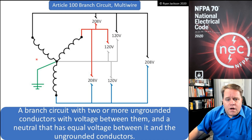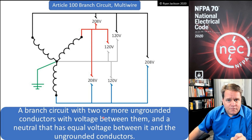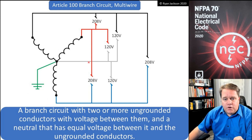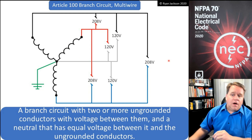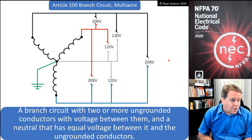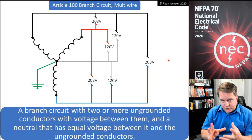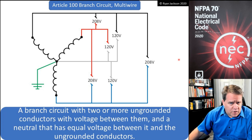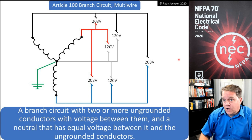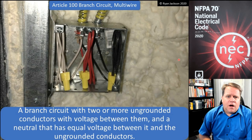If I'm sharing black, red, and blue with a white wire — two or more ungrounded conductors with voltage between them — I have a voltage between A and B, a voltage between B and C, and a voltage between C and A, with a neutral that has equal voltage between all of those. That would be a multi-wire branch circuit. On a high-leg delta system, if I'm sharing phase A and C with the neutral, but B has a different voltage to neutral, it wouldn't comply with that equal-voltage requirement. So you can share a neutral on a high-leg delta system with two of the three phases, but not all three.